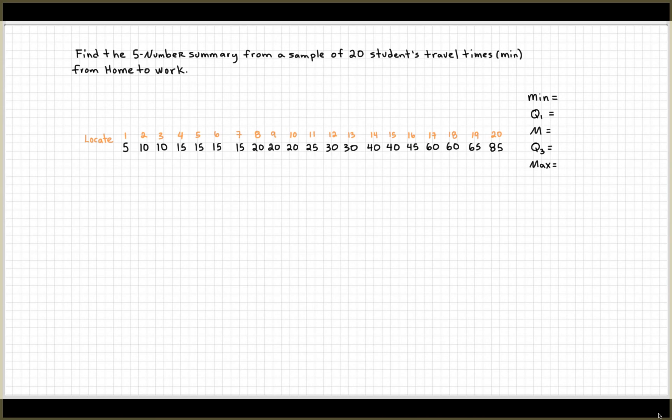I need five numbers for my five-number summary. The min and max is going to be easy. Min is five, max is 85. And now we're going to find and locate where the median is. That's going to be (n+1)/2. n is 20 because I have 20 data points.